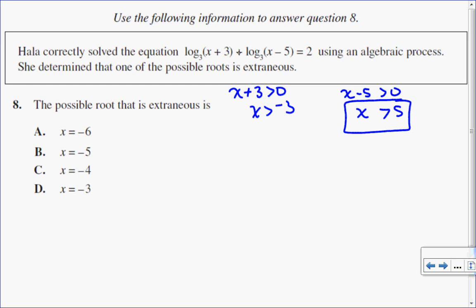So to solve this, I have two logs that are added and they have the same base, so I can combine those as one big log by multiplying the arguments together. So x plus 3 times x minus 5 equals 2.